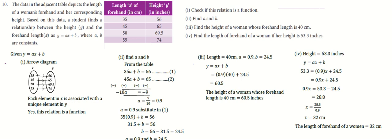The data in the adjustment table depicts the length of a woman's forehand and her corresponding height. Based on this data,